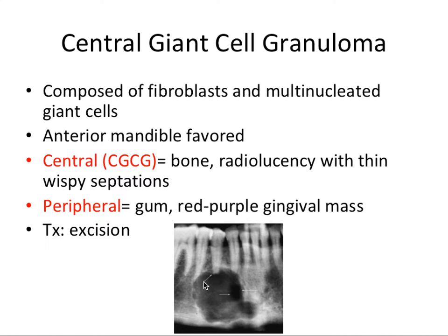First we have the central giant cell granuloma, and this one is composed of both fibroblasts and these multinucleated giant cells. All the ones we're going to talk about in this video will have these multinucleated giant cells. This one favors the anterior mandible and has a central and peripheral form — the central giant cell granuloma being the more common form, but there's also a peripheral giant cell granuloma.